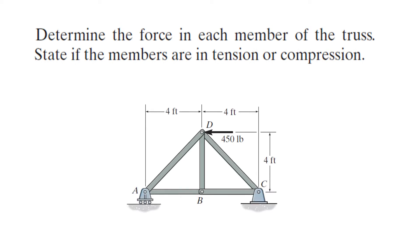This is the problem statement: we have a truss which has members AB, BC, CD, BD, and AD, and the truss is subjected to a force of 450 pounds at point D. The truss is supported by a roller support at point A and by a pin support at point C. We have to determine the forces in each member and state whether the members are in tension or compression.